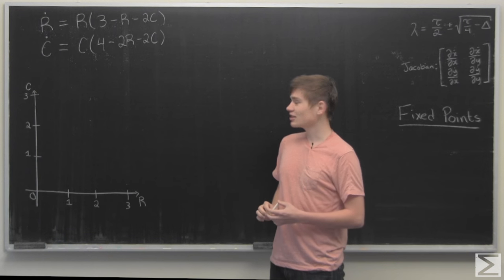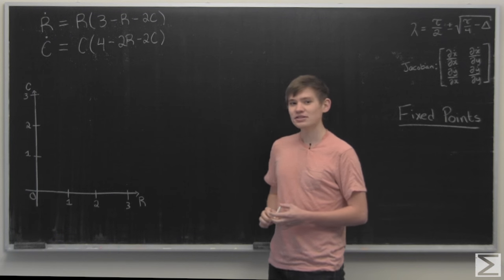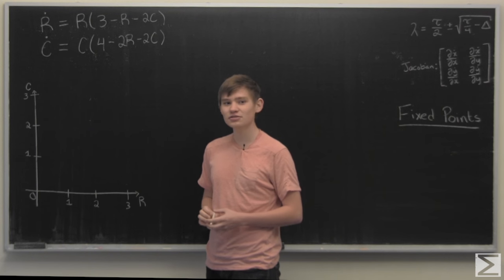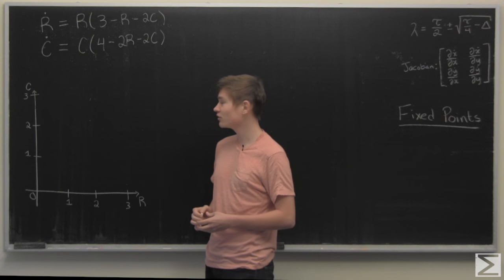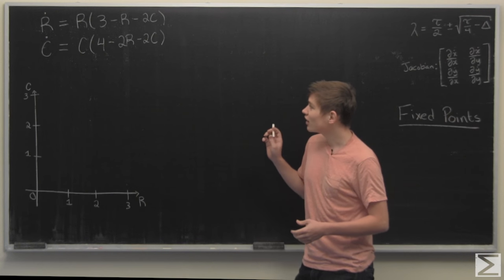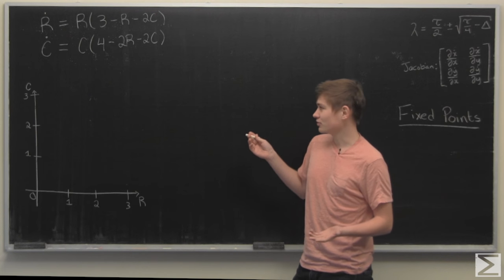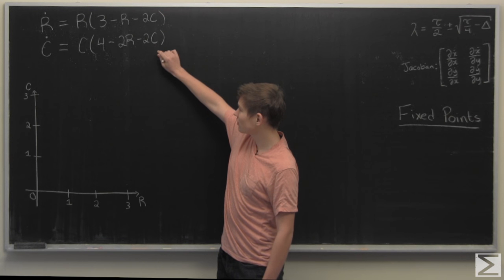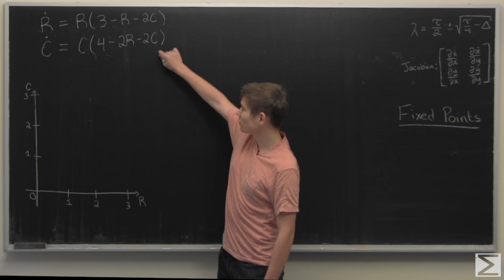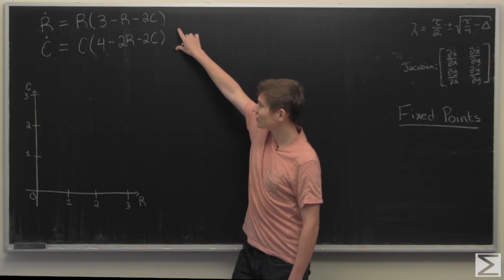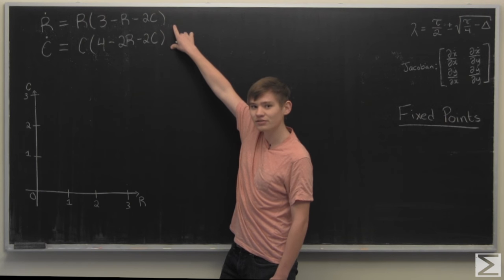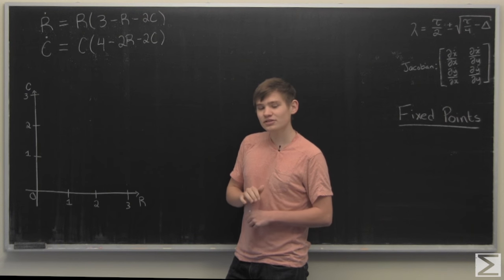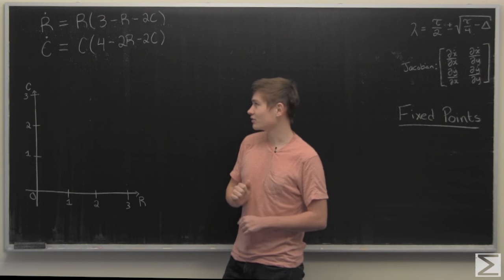So this week you decided to become a rabbit and cow farmer and unfortunately you decided to keep them in the same pen and they start fighting over the grass and therefore a competition ensues. Now the growth of both populations of rabbits and cows are given by this system of differential equations and the problem asks you to find the fixed points and determine their stability for this system.